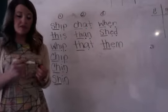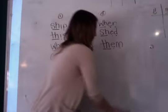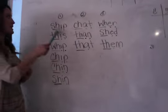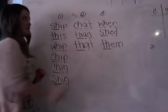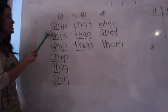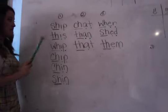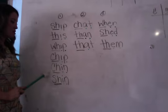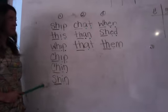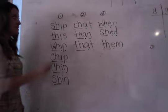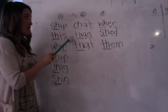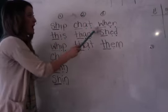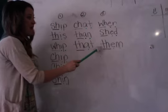Let's go over our words for this week. We have three different short vowel sounds: I, A, and E. Column one: ship, this, whip, chip, chin, shin. Column two: chat, van, that. Column three: when, shed, them.